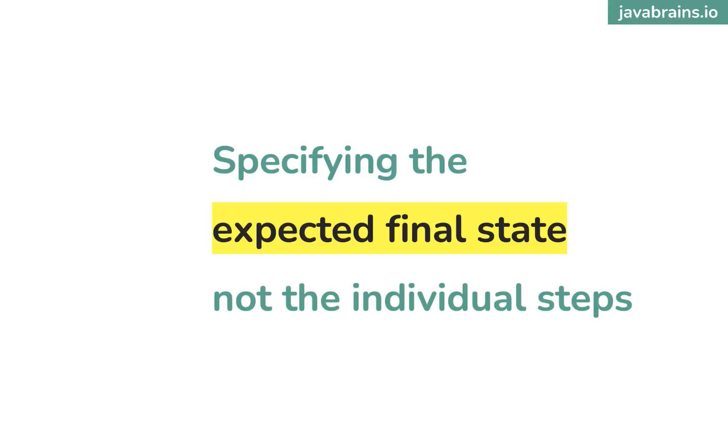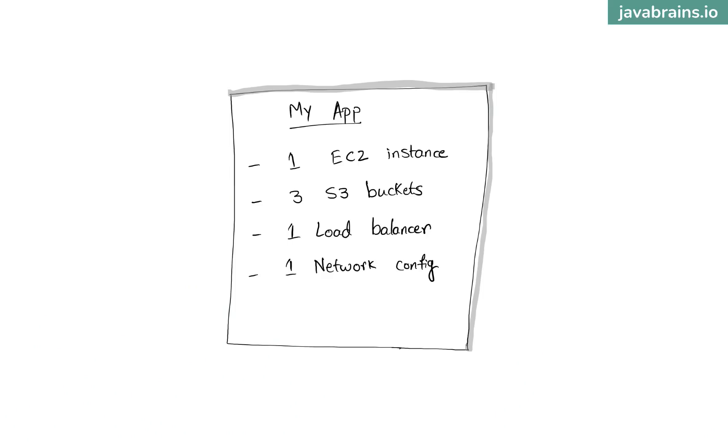So your infrastructure as code would be a representation of your infrastructure shopping list — one EC2 instance, three S3 buckets, and so on. Isn't this so much easier than coding these steps imperatively? Of course, there is one drawback: as easy as it is to write a shopping list, you need a friend who's going to go to the store and shop those items for you. So if you write a shopping list for your infrastructure items, who's going to go and provision those resources in the cloud?